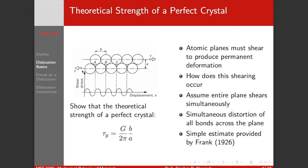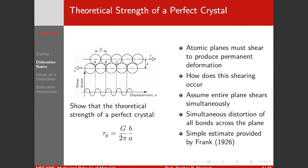So we can model this stress as a sinusoid. And if we assume that this whole plane shears simultaneously, we're going to simultaneously distort all of the bonds across the plane and reform new bonds, and we can end up with an estimate for the shear strength of the crystal as basically G, the shear modulus by 2π.